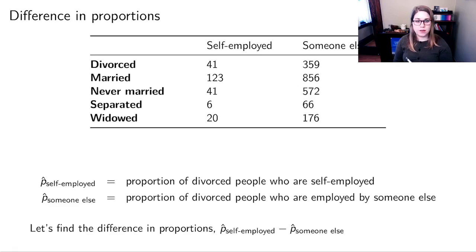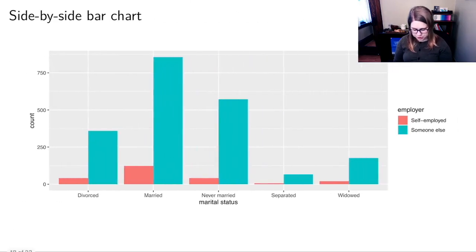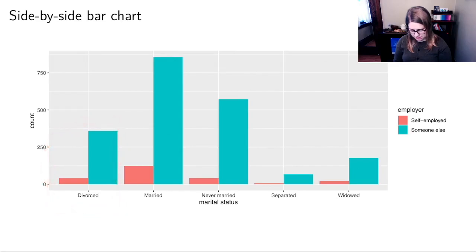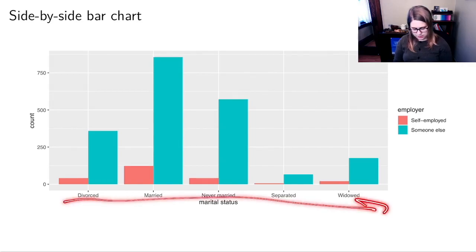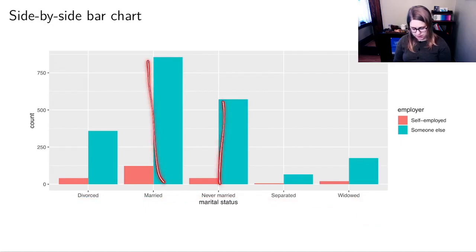Those are the summary statistics we can use to summarize two categorical variables. Of course, we also have data visualizations. I could do a side-by-side bar chart — looking at divorced people, most of them work for someone else, but a small proportion are self-employed. That trend looks the same across all marital statuses: more people work for someone else than are self-employed. You can estimate values from the bars, though the main idea is to show the overall trend.